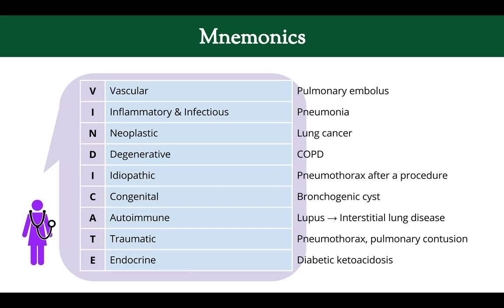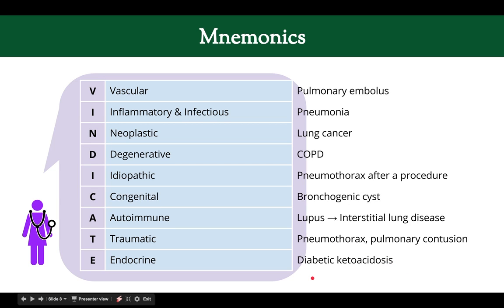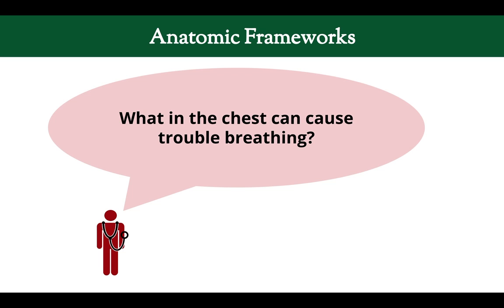Continuing with VINDICATE: idiopathic — maybe a procedure caused a pneumothorax; congenital — a bronchogenic cyst; autoimmune — lupus; traumatic — a pulmonary contusion; and endocrine — diabetes causing it. You can see how this mnemonic helps grow your differential diagnosis.